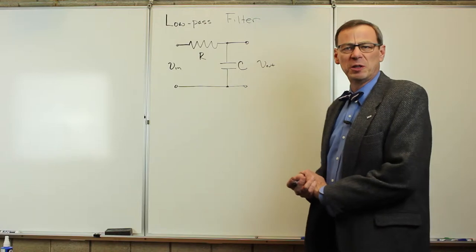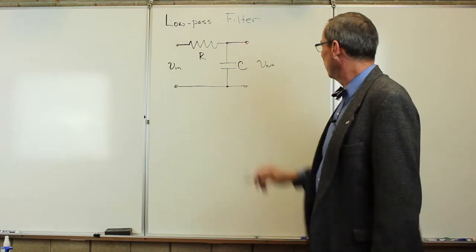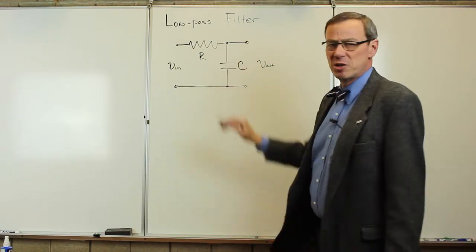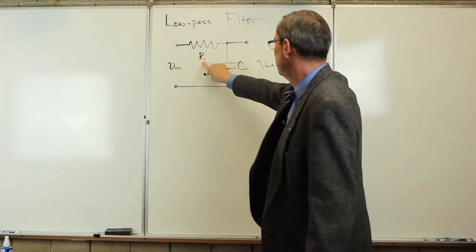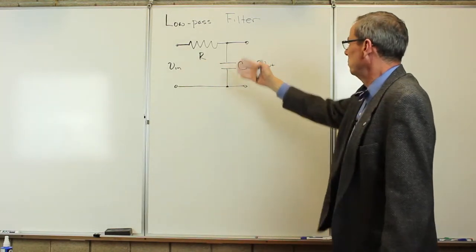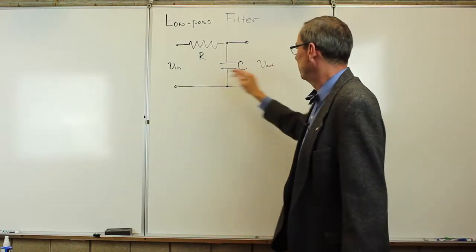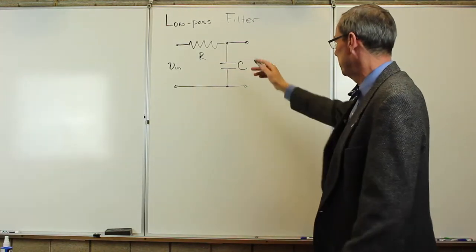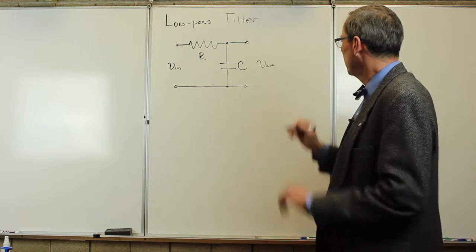One of the first filters we're going to look at in this course is the so-called low-pass filter. From our generic filter, we've basically replaced Z1 with R and Z2 with C, and we measure the output voltage across the capacitor.